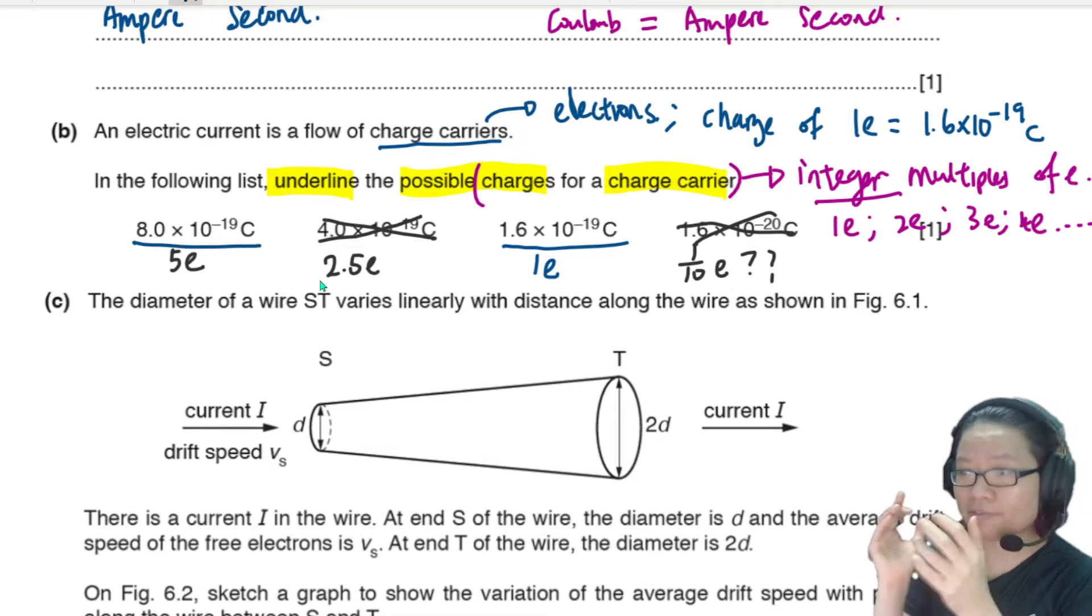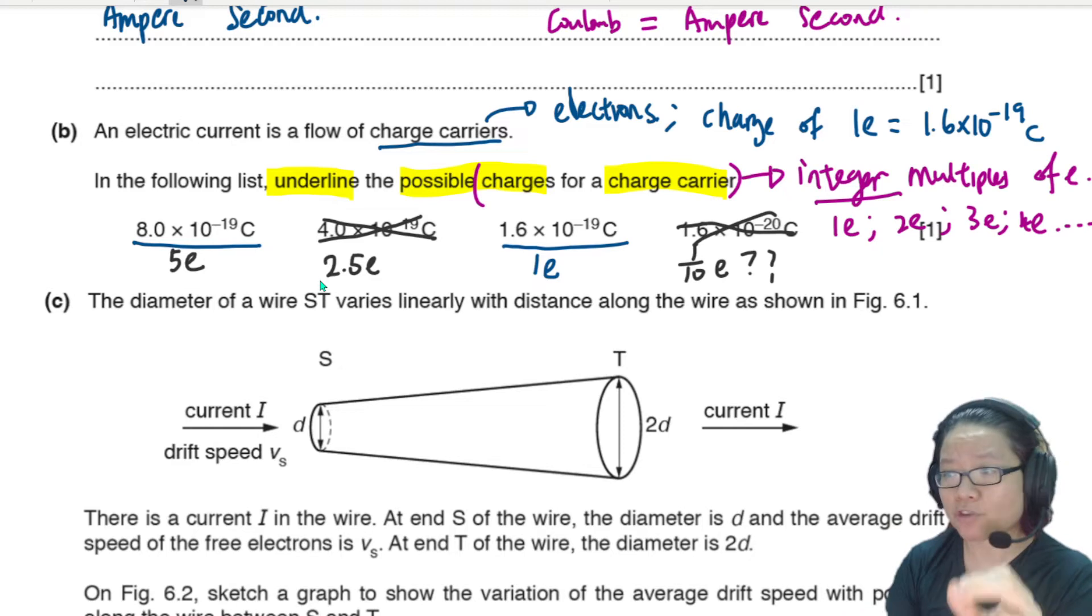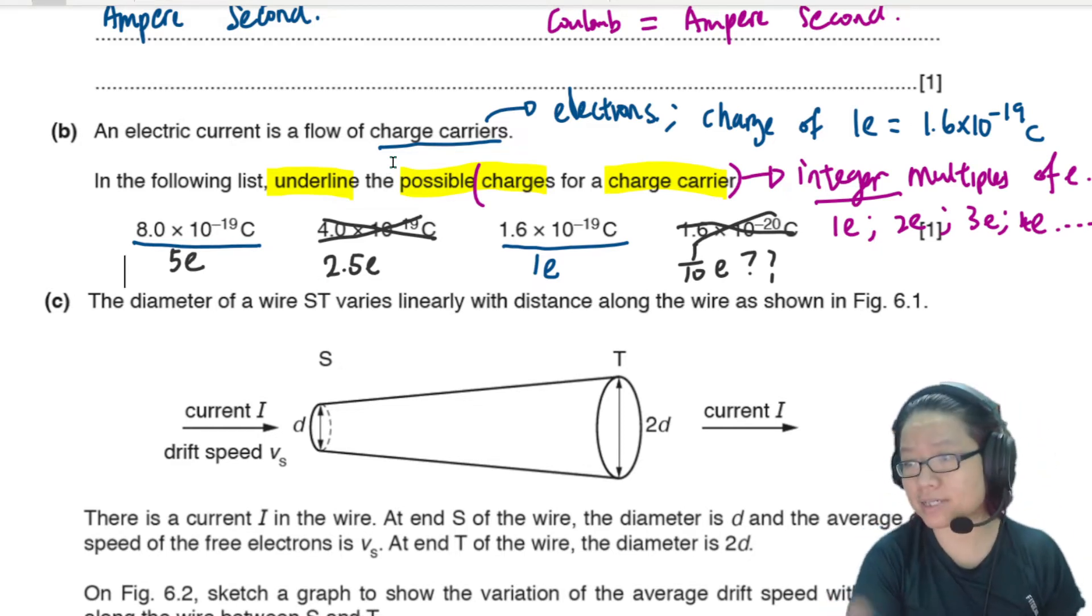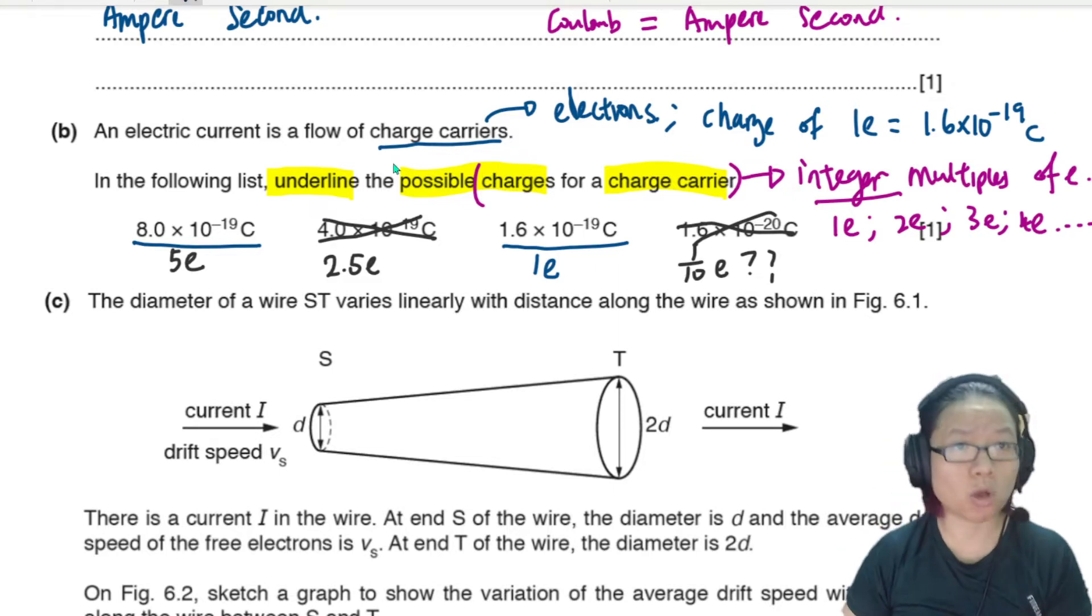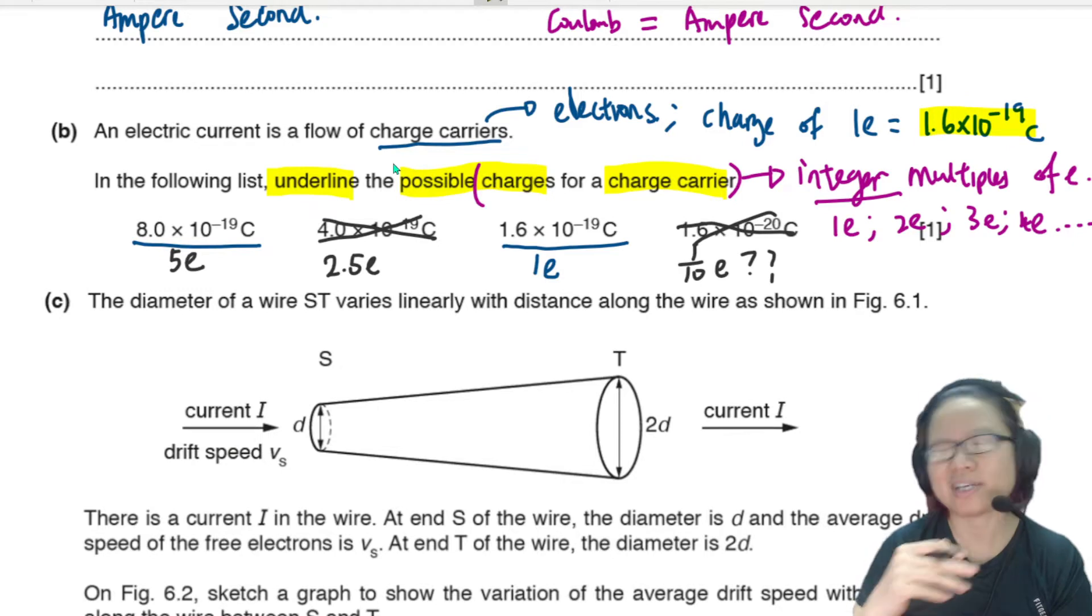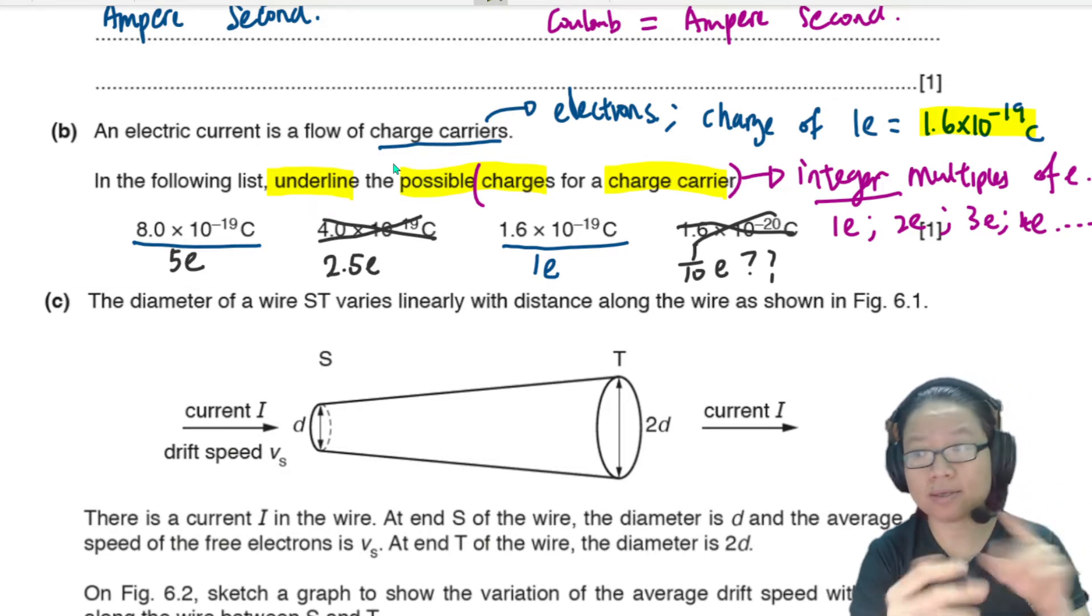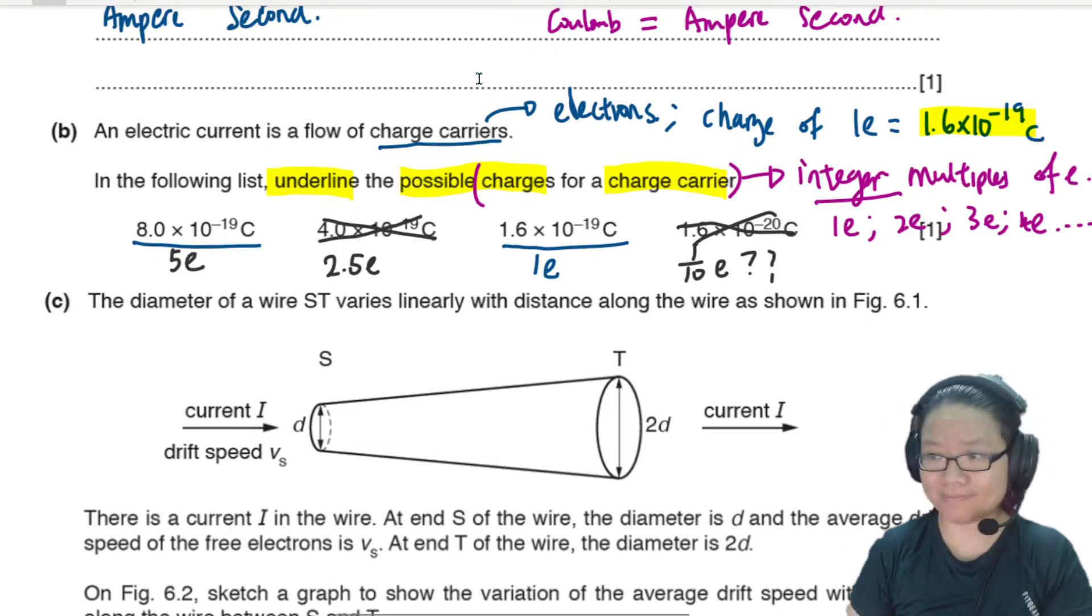So what I'll do now is take 4 times 10 to the power of negative 19, divided by 1.6 times 10 to the power of negative 19. So if I get an integer number, then this is a possibility. But let's see, 2.5, there's no integer. So this one is out because this is 2.5E. Again, you cannot have half an electron. Electron is a whole thing. You either get 1 or you get none. You get 2 or you get 3. Last bet, 8. I think 8 can. So if I replace this by 8, I will get 5. We got 5 valence electrons, 5E. So this one is okay to go. We can underline this. Important thing to remember is that the charge of every electron is the same, 1.6 times 10 to the power of negative 19 coulomb. You forget this number, you can find from the table of constants in the front of your question paper. All your charge carriers must be integer multiples, 1E, 2E, 3E, 4E, whatever. Fraction cannot.